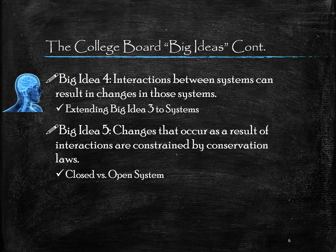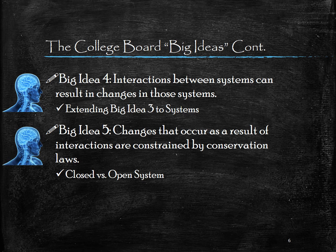Big idea 4 is very similar to big idea 3, except while big idea 3 describes interactions between objects, big idea 4 states that systems can also interact with each other. Two different systems can interact, and those interactions can cause changes in those systems. Big idea 5 talks about how changes that occur are always a result of interactions governed by the laws of conservation. Key conservation laws include the law of conservation of energy, the law of conservation of mass, and the law of conservation of momentum. All of these laws must be obeyed, so whatever interactions or changes we describe must always be consistent with the laws we know to be true.